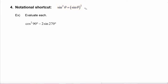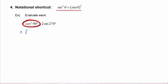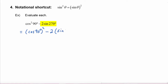So when we look at this first example and we want to evaluate cosine squared of 90 degrees minus two times the sine of 270 degrees, what that really means is we're going to take the cosine of 90 degrees and square it, then we're going to subtract 2 times the sine of 270 degrees.